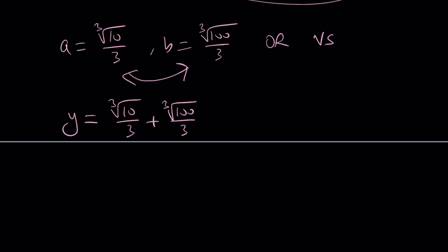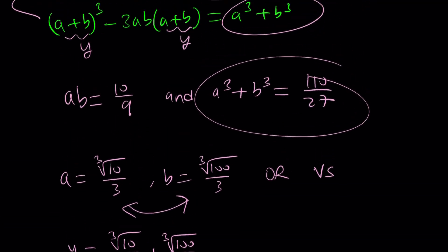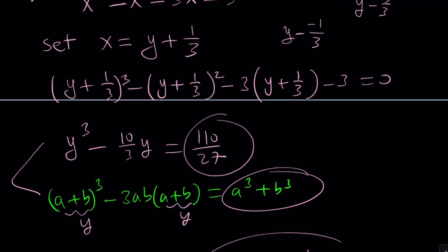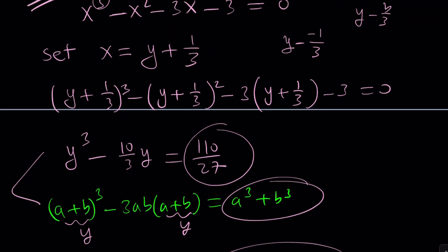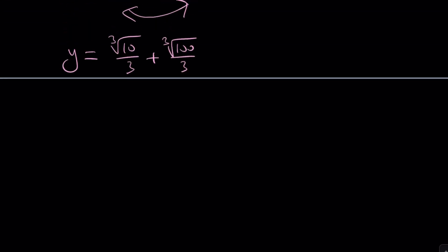But that's not the answer we're looking for, because we are looking for x. And x is y plus one third. So, what we need to do is add one third to get x from here. x is going to be the cube root of 10 over 3 plus the cube root of 100 over 3 plus one third. And since they all have a common denominator, I can write this as cube root of 10 plus the cube root of 100 plus 1 all over 3.